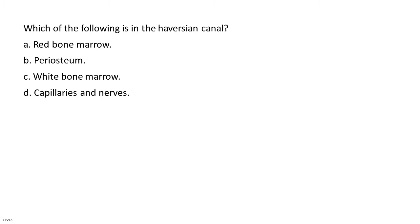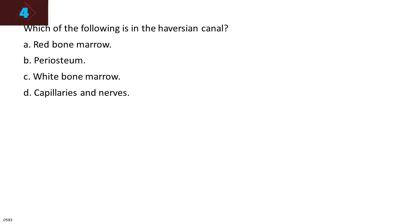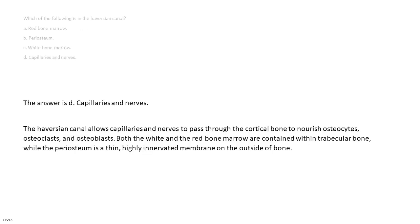Which of the following is in the Haversian canal? A. Red bone marrow. B. Periosteum. C. White bone marrow. D. Capillaries and nerves. The answer is D, capillaries and nerves. The Haversian canal allows capillaries and nerves to pass through the cortical bone to nourish osteocytes, osteoclasts, and osteoblasts. Both the white and the red bone marrow are contained within trabecular bone, while the periosteum is a thin, highly innervated membrane on the outside of bone.